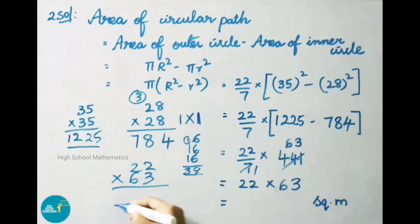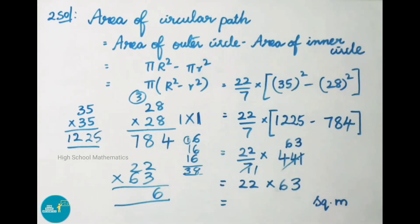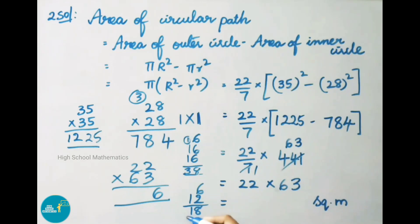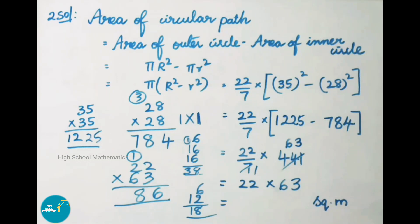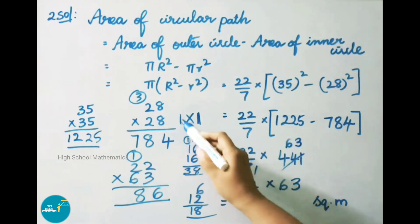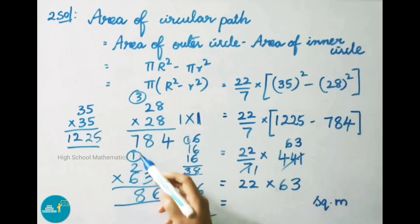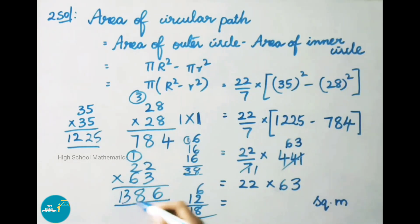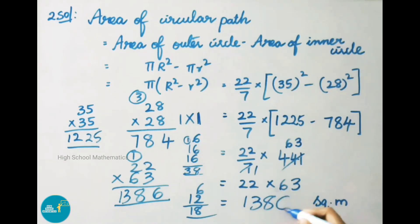Multiply 22 × 63: vertically 3 × 2 = 6; cross multiply 3 × 2 = 6 and 6 × 2 = 12; 12 + 6 = 18, write 8 carry 1; vertically 6 × 2 = 12, plus 1 = 13. So 22 × 63 = 1386 square meters. Therefore, area of circular path is 1386 square meters.